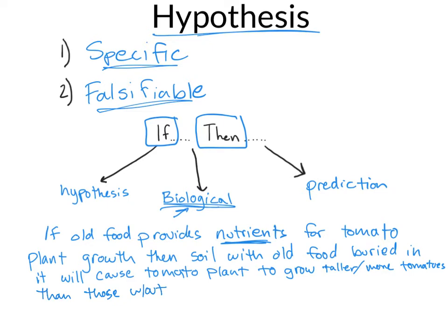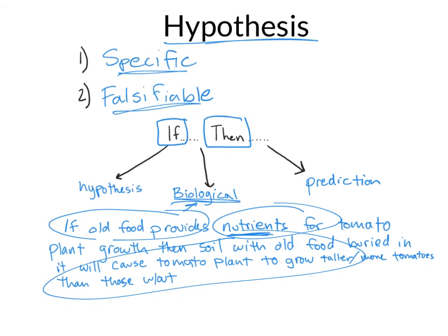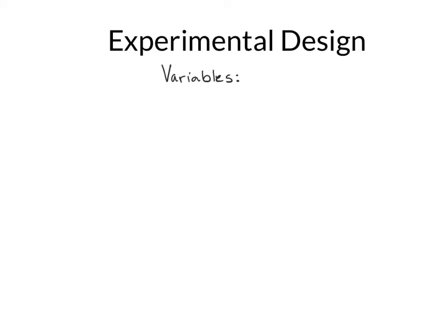This hypothesis would earn full points. Now that we have a hypothesis, we want to set up our experiment. To understand that, we need to understand what variables are in play. A variable is any condition that can change within an experiment. We want to manipulate just one variable; otherwise, it becomes too complicated to determine what causes the change.